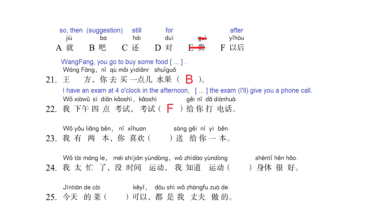Sentence number 23: 'nǐ xǐhuān' — blank — 'sòng gěi nǐ yì běn.' I have two copies. If you like it — blank — I'll give you one. For this sentence we have letter A, 'jiù', meaning 'so' or 'then': if you like it, then I'll give you one. 'Nǐ xǐhuān, jiù sòng gěi nǐ yì běn.'